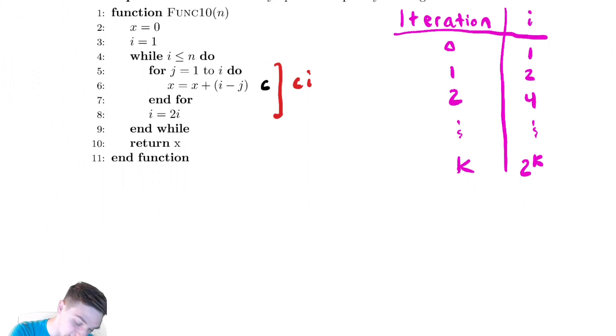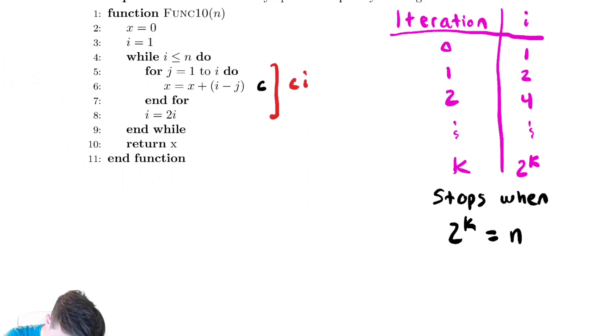We want to identify when does that terminate. Well it stops when the value of our loop variable i, which is 2 to the k here, is equal to the stopping condition of the while loop which is n. Solve for k by taking a log base 2 of both sides. So that tells me the number of iterations.